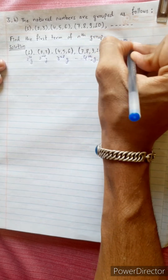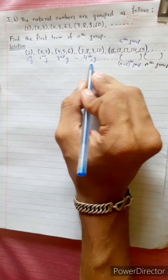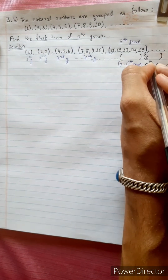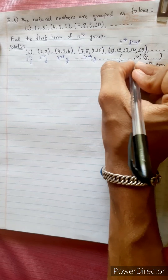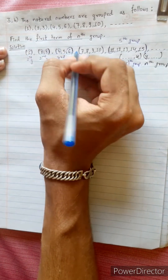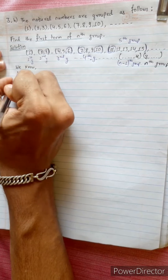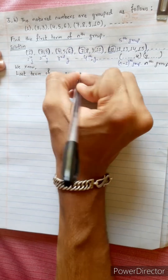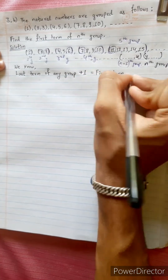5th group, nth group, n-1 group — and we are going to find the first term of the nth group. We know the last term of any group, and we know the next group. We are going to find the first term of the next group.